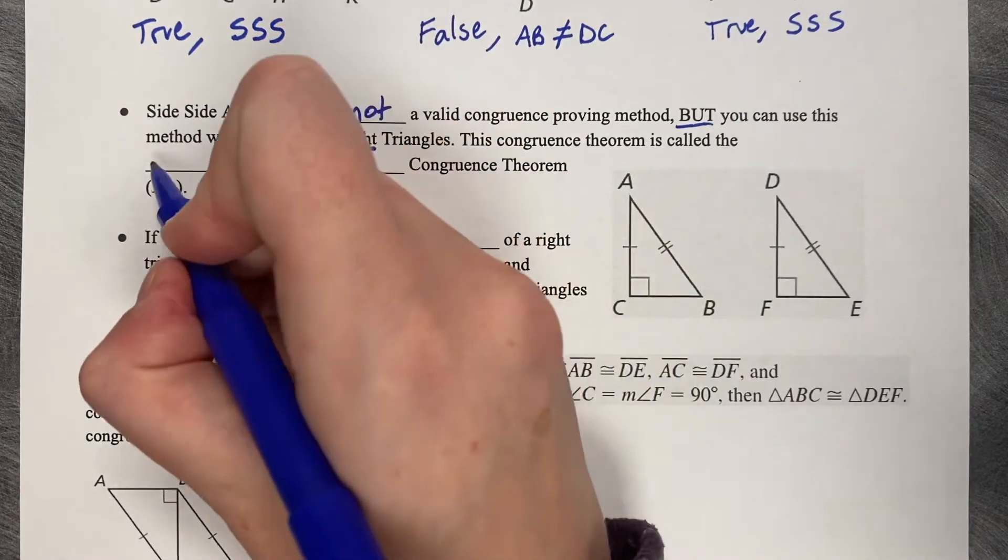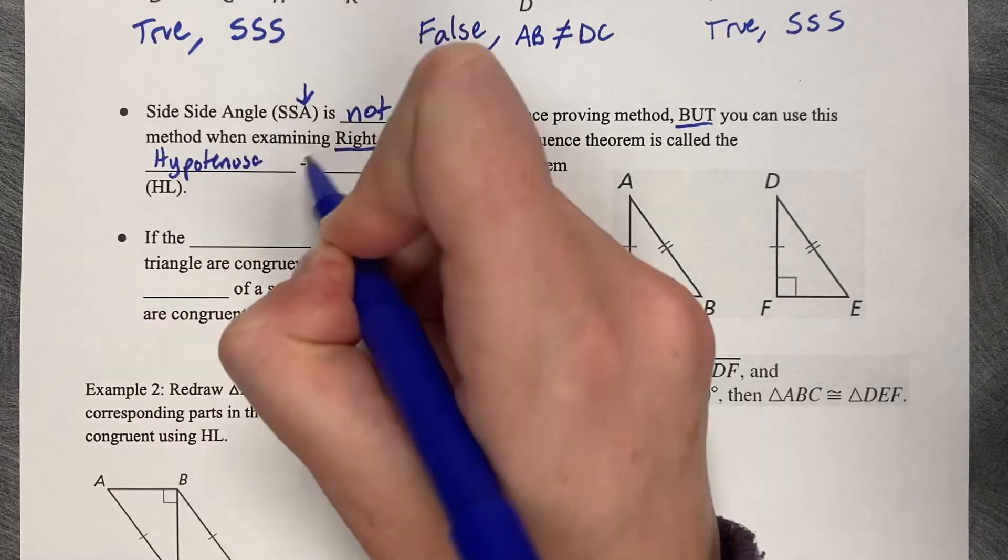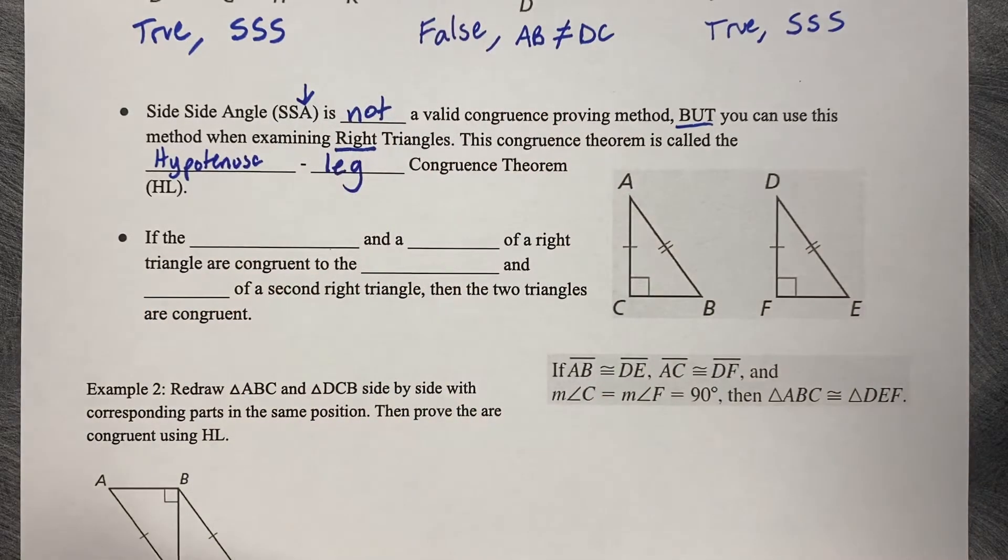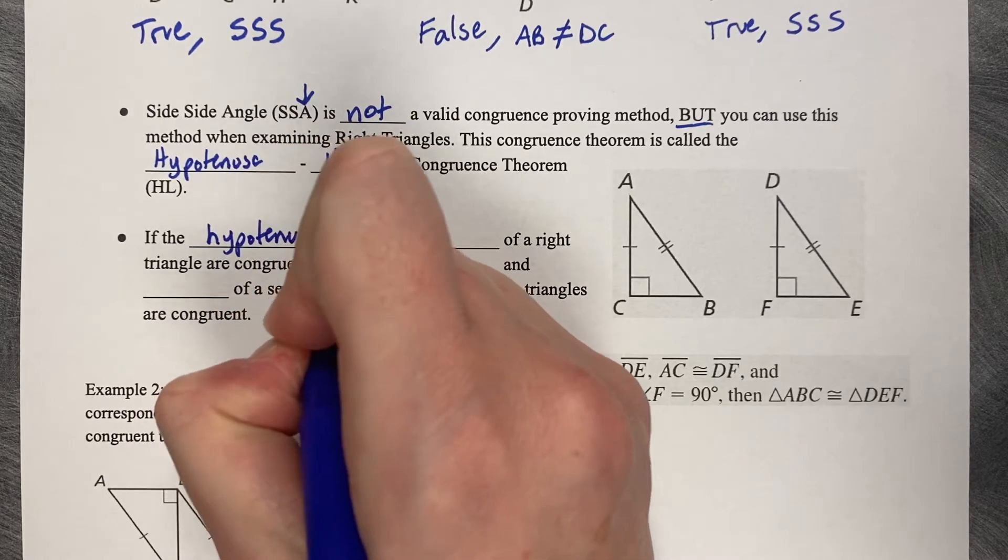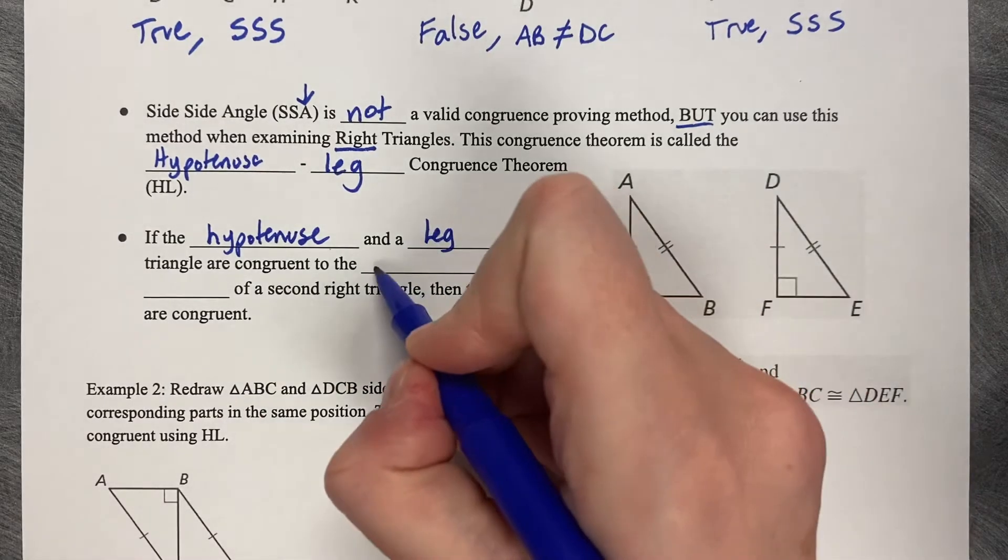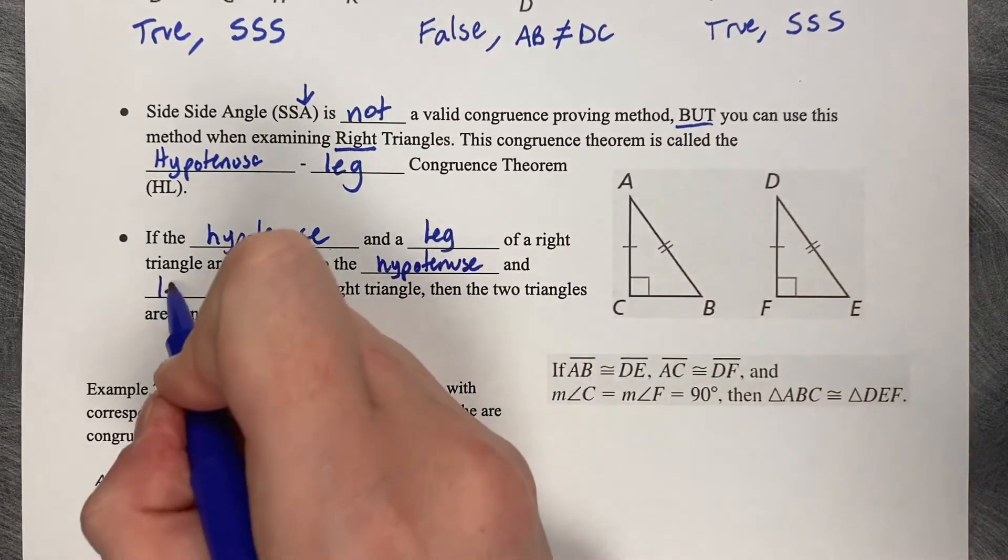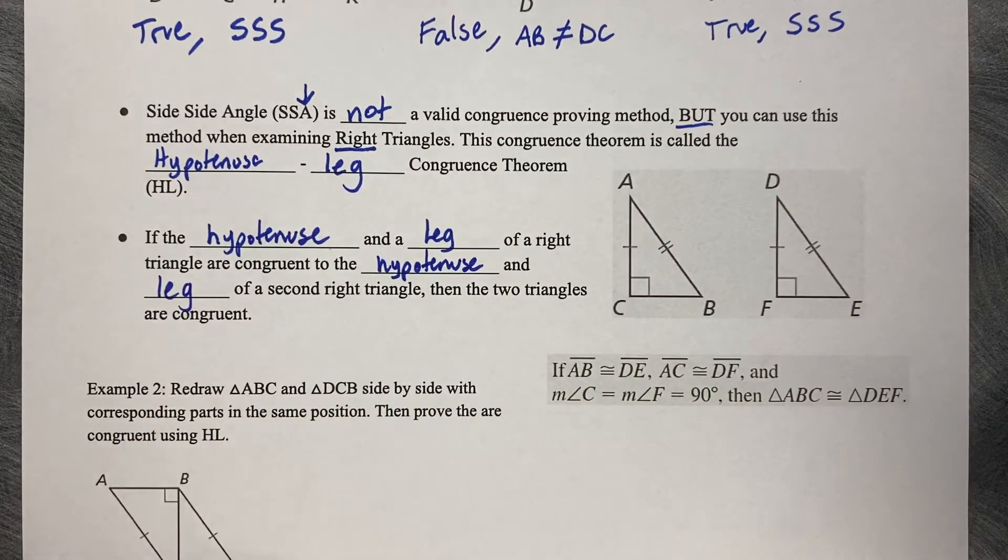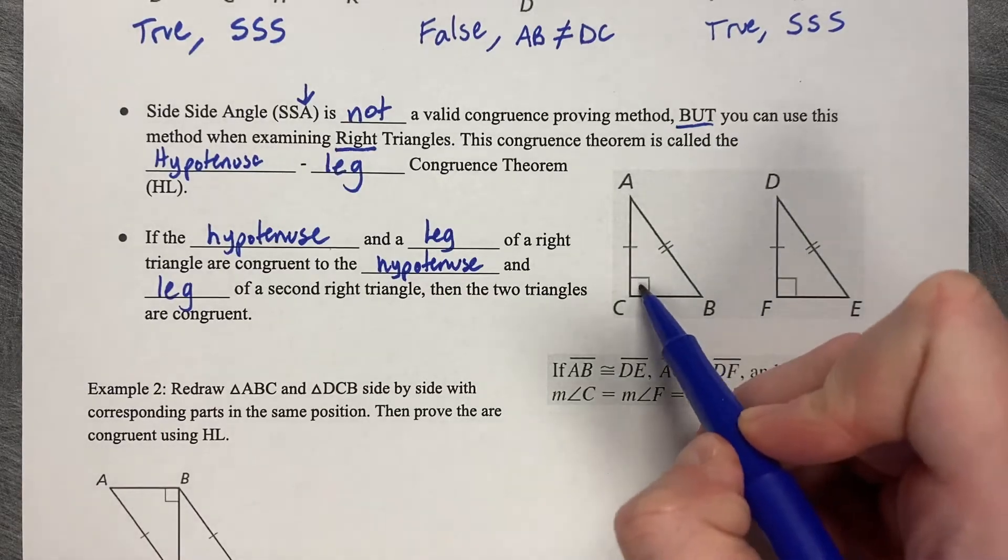This congruence theorem is called hypotenuse leg, or HL. If the hypotenuse and leg of a right triangle are congruent to the hypotenuse and leg of a second triangle, then the two triangles are congruent. Here's our 90-degree angle that matches.